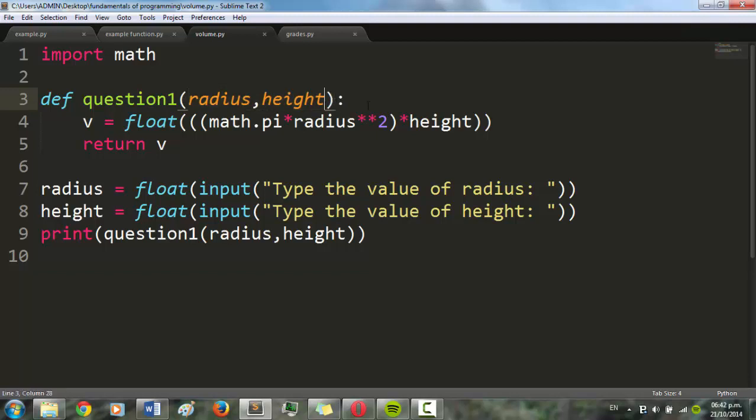The parameters are radius and height, and the user in this case, through this input, gives the value of those parameters. So in this case, I can print the calculation that the function does by...